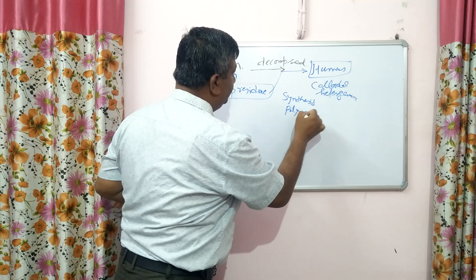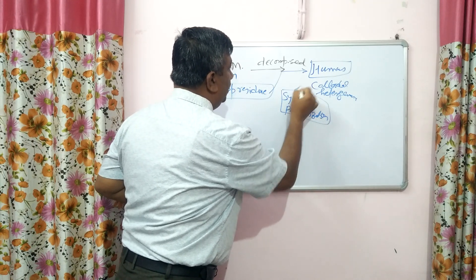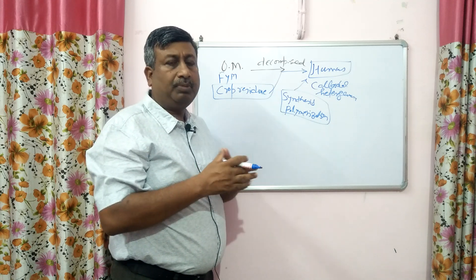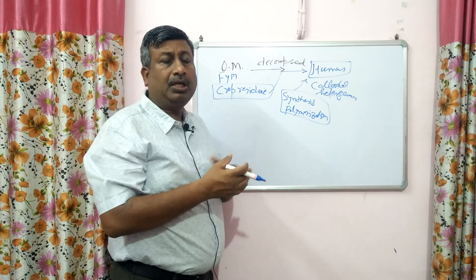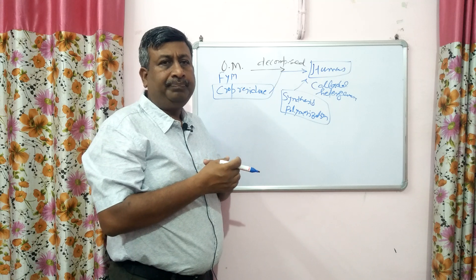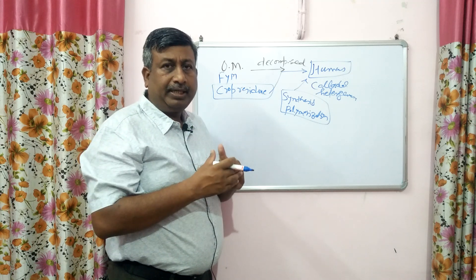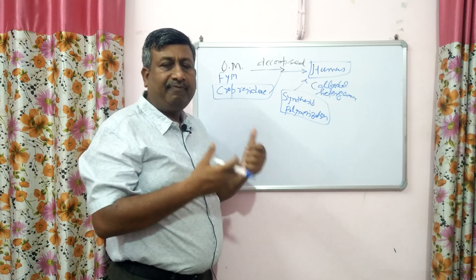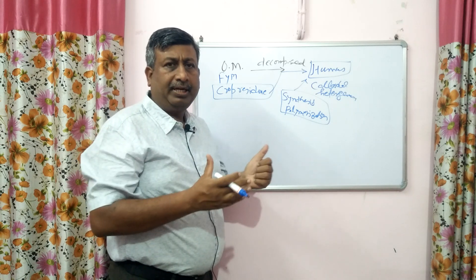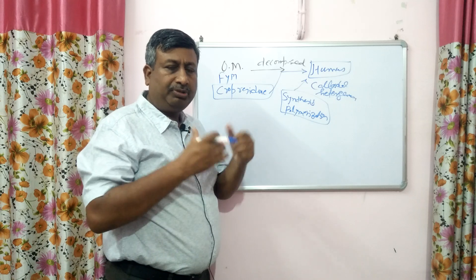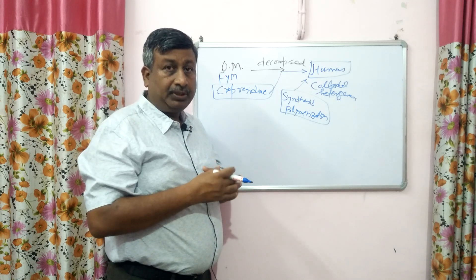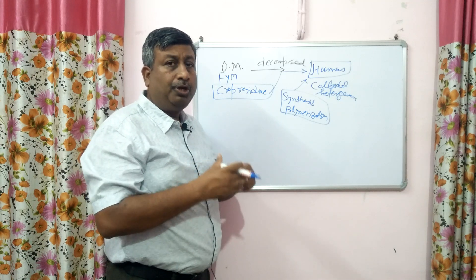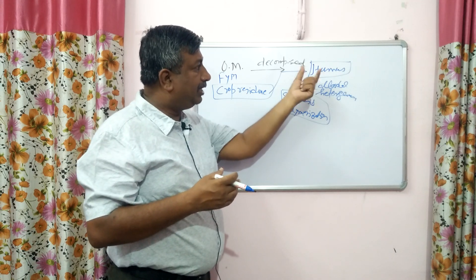The precise mechanism of humus formation is not entirely clear. Polymerization results in the synthesis of new compounds. Whatever organic material we add — crop residue, green manure, FYM, compost, dung, urine — it is subjected to decomposition. During decomposition, nutrients are released and utilized by the crop. New compounds are formed through synthesis and polymerization by microbes, and then humus formation takes place.